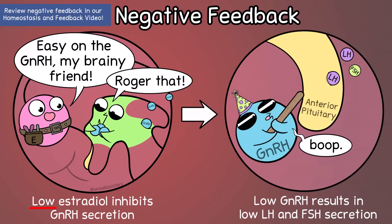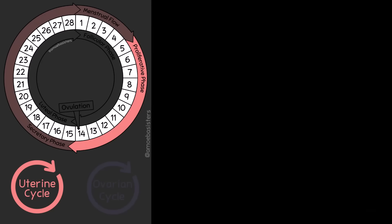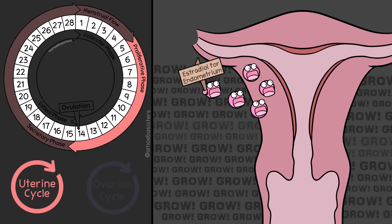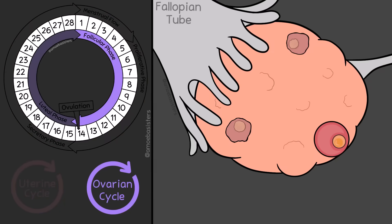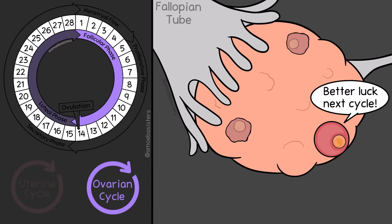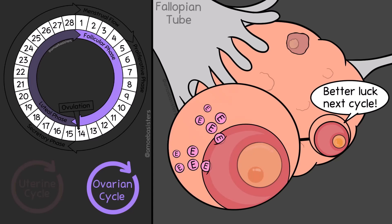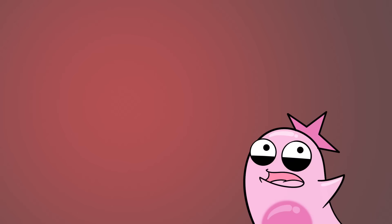Low levels of estradiol will result in negative feedback on the hypothalamus and anterior pituitary, which inhibits the secretion of GnRH and keeps levels of LH and FSH relatively low. Let's move to the next uterine cycle phase, the proliferative phase. In this phase, the lining — the endometrium — is stimulated to regrow thanks largely to that increasing estradiol. Back to the ovarian cycle, still in the follicular phase, though later in the follicular phase, the low FSH levels prevented most follicles from reaching this point. But there will be a mature follicle that is dominant in making more and more estradiol.